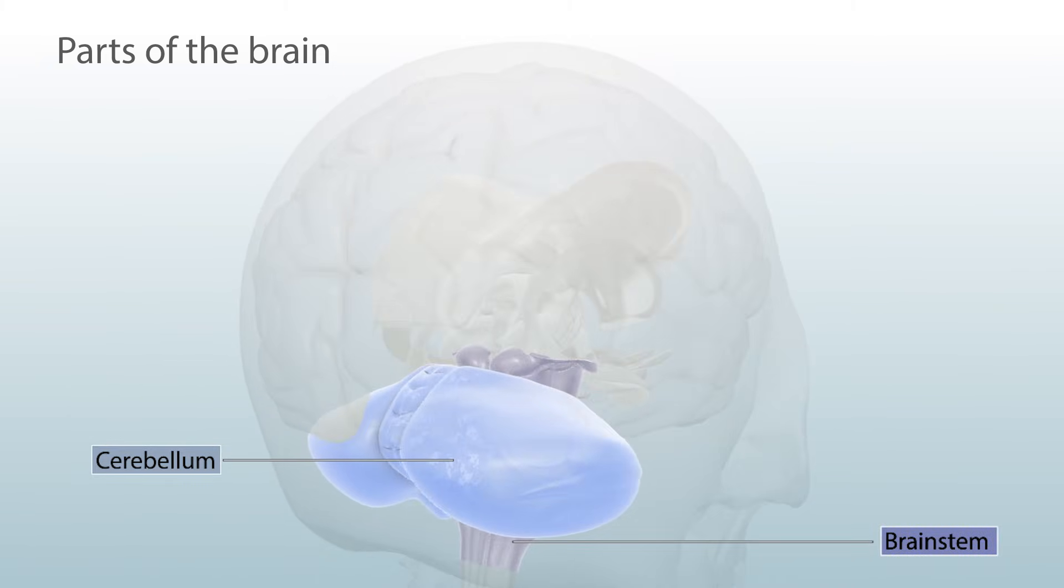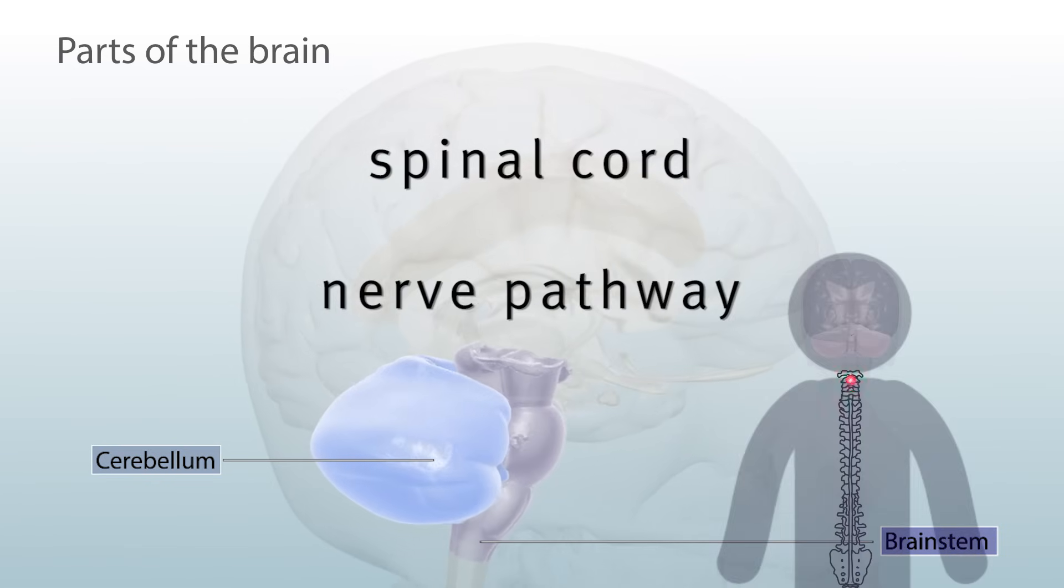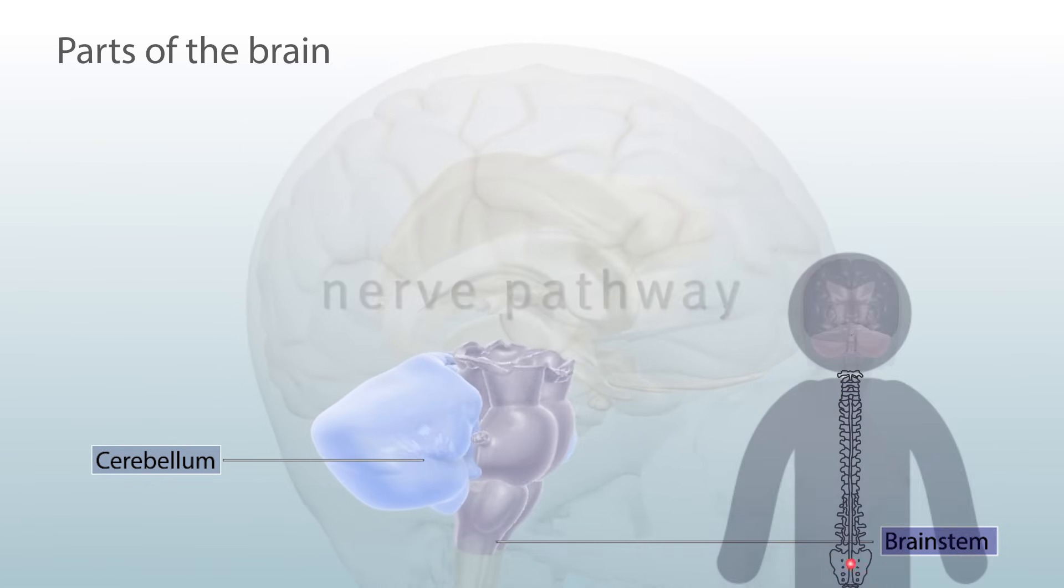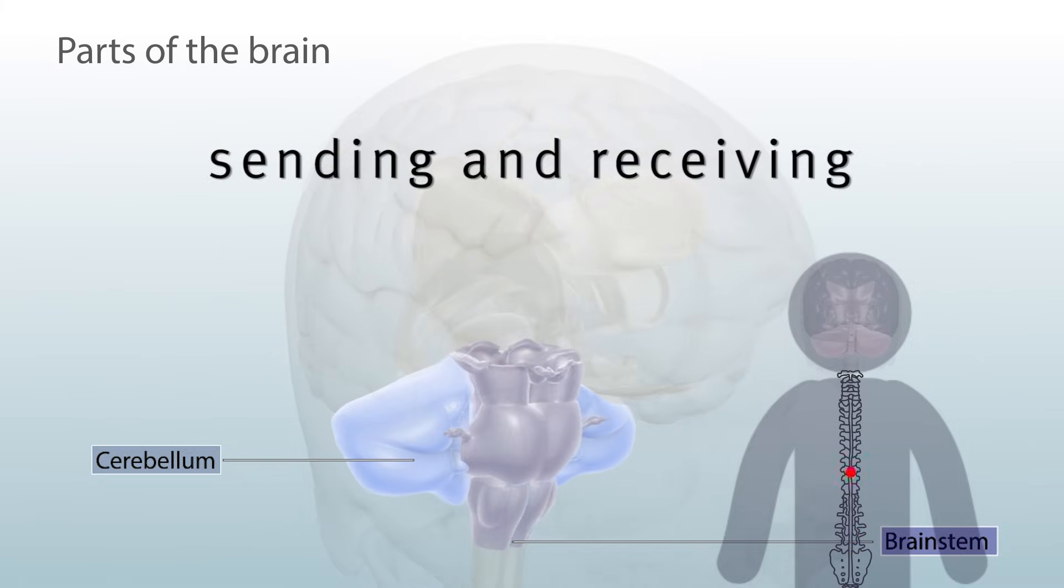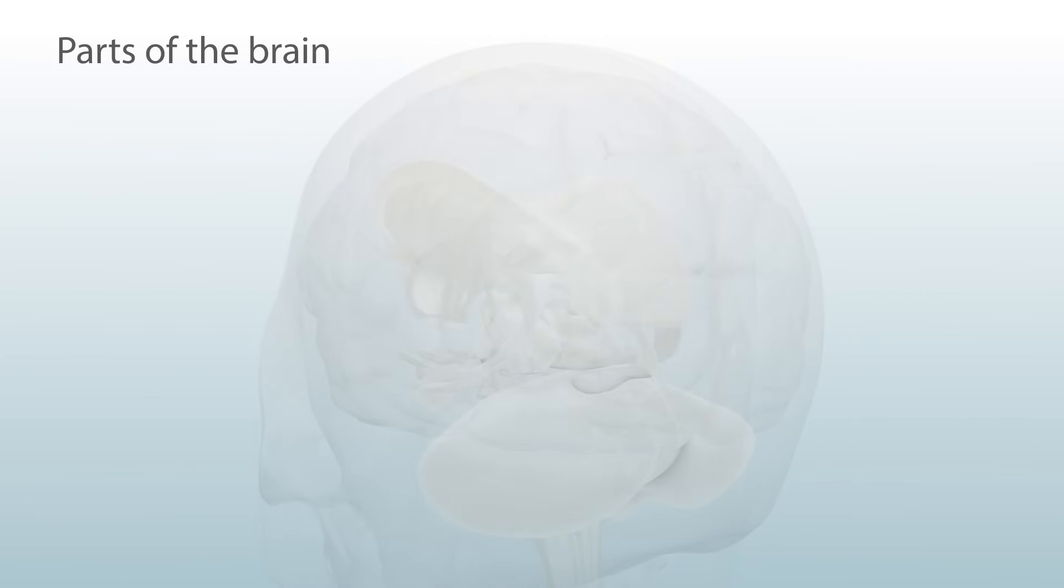Underneath is the brain stem, which connects the brain to the spinal cord, a nerve pathway that runs all the way down your back, sending and receiving information from your senses. The brain stem includes the pons, which helps control our breathing.